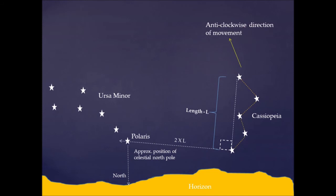Another way to find the Polestar is to use Cassiopeia. Cassiopeia is a series of stars forming a W or an M shape depending on your perspective. It also rotates anti-clockwise around the North Pole in the sky. What you do is take the distance between the two outermost stars in Cassiopeia, turn that distance through 90 degrees, and double it — that will lead you to Polaris.